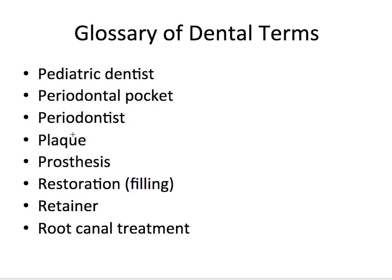Plaque is a sticky film of bacteria and other substances that coat the teeth every day. Brushing and flossing help remove plaque, and if not removed regularly plaque can lead to tooth decay and gum disease. A prosthesis is an artificial replacement of a tooth or teeth or even missing soft and hard tissues. A restoration is a treatment that repairs or replaces teeth — also called a filling. A retainer is a removable device worn in the mouth to prevent teeth from moving out of position, often used after orthodontic treatment or premature loss of teeth to hold open spaces. Root canal treatment is a type of treatment that removes the tooth nerve or pulp and seals that space with some inert material.